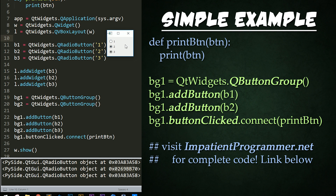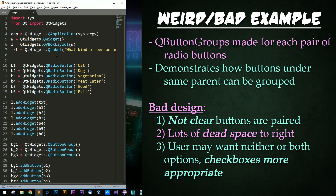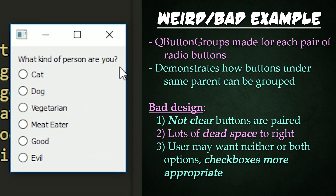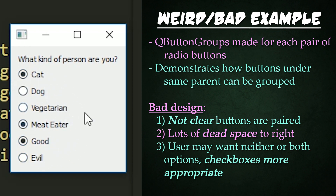So how else can you use QButtonGroups? Here is a terrible example. In the UI that pops up for this demo, it says: what kind of person are you, a cat or dog person? And it creates a toggle between these two. Then are you vegetarian or meat eater? And there's a toggle between these two. And finally, good or evil. So these are three different button groups for the first two, second two, and third two. I wanted to illustrate the power of different button groups being used for radio buttons that are immediately next to each other under the same QWidget parent.